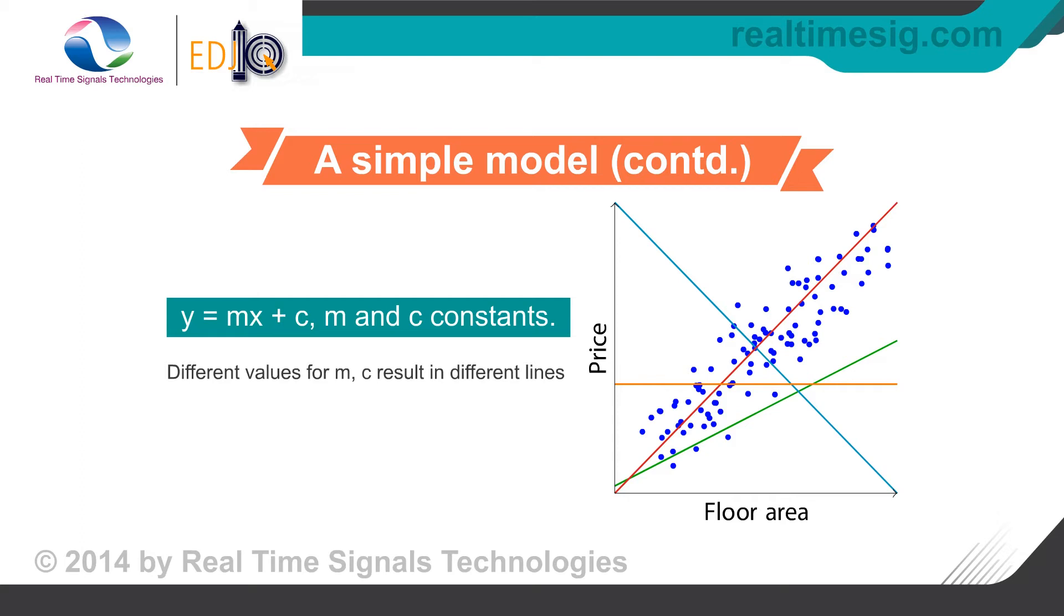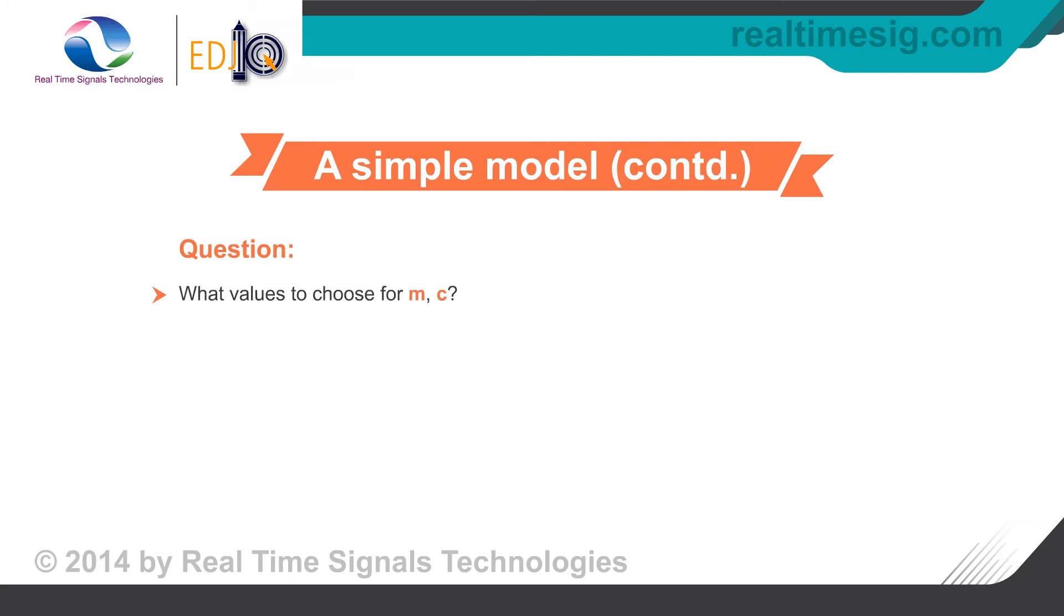Different values for m and c describe different lines in the xy plane. The question that arises is what values to choose for m and c. What are the best values for m and c? That is, is there a criterion to pick the values for m and c?